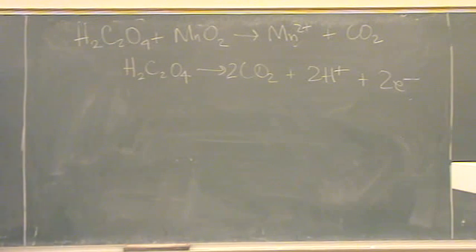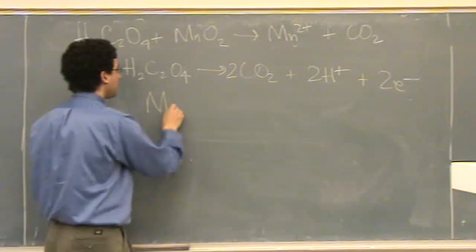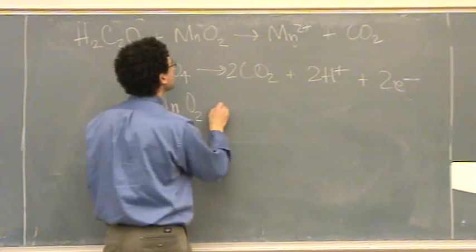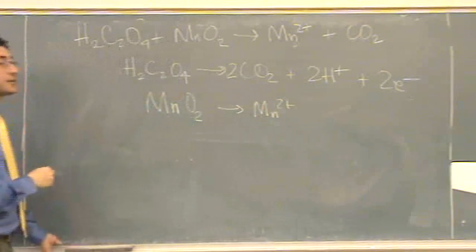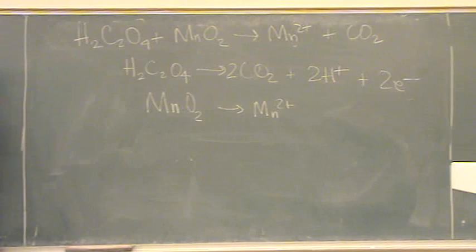Is that okay so far? Next part: manganese four oxide goes to manganese two ion. First step is to balance anything that's not oxygen or hydrogen. Manganese is balanced already.